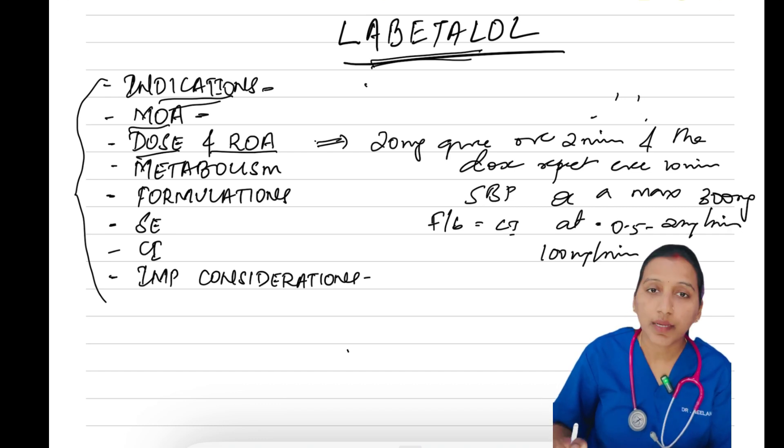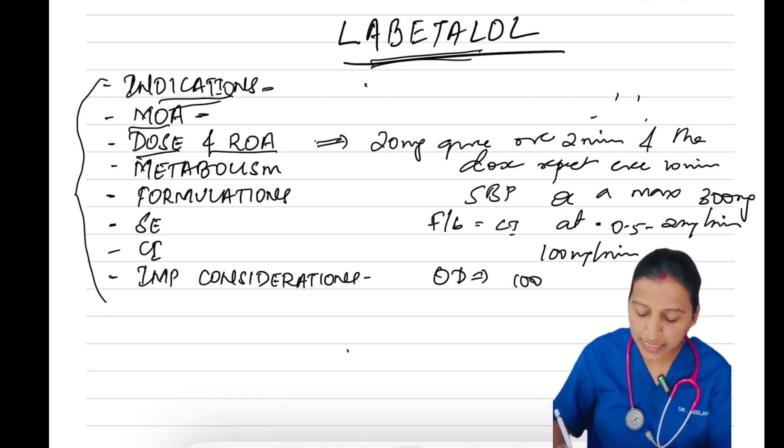For oral dosing, start with 100 mg initially and increase by 100 mg every 2 to 3 days. Usual oral dose ranges from 200 to 400 mg every 12 hours, not to exceed 2400 mg per day.